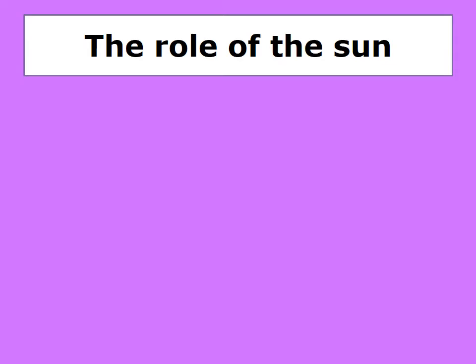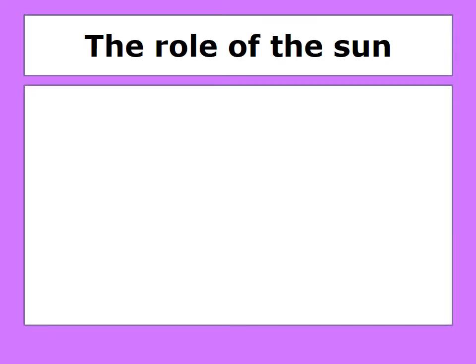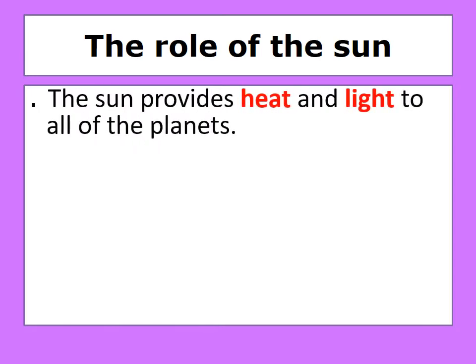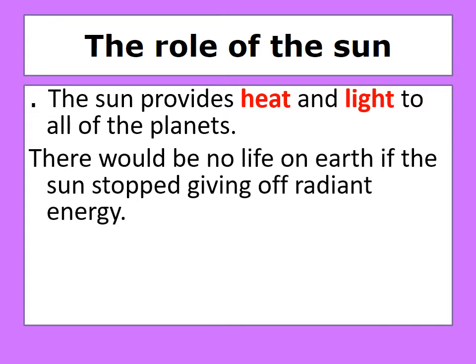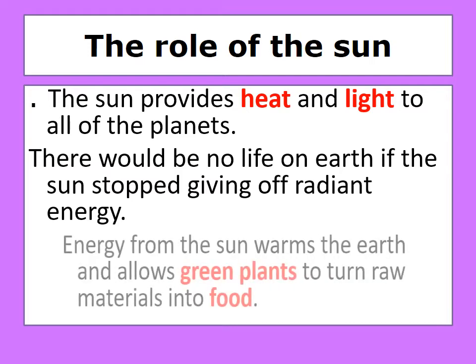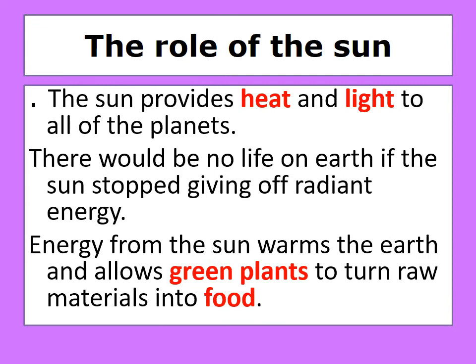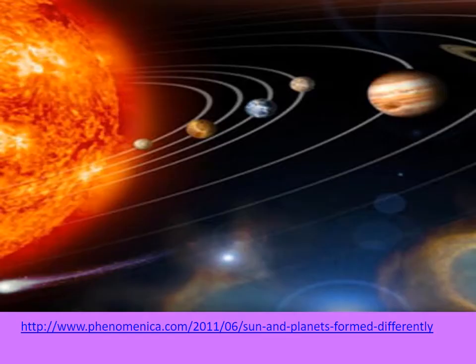The role of the sun — what is it? The sun provides heat and light to all of the planets. There would be no life on Earth if the sun stopped giving off radiant energy. Energy from the sun warms the Earth and allows green plants to turn raw materials into food.